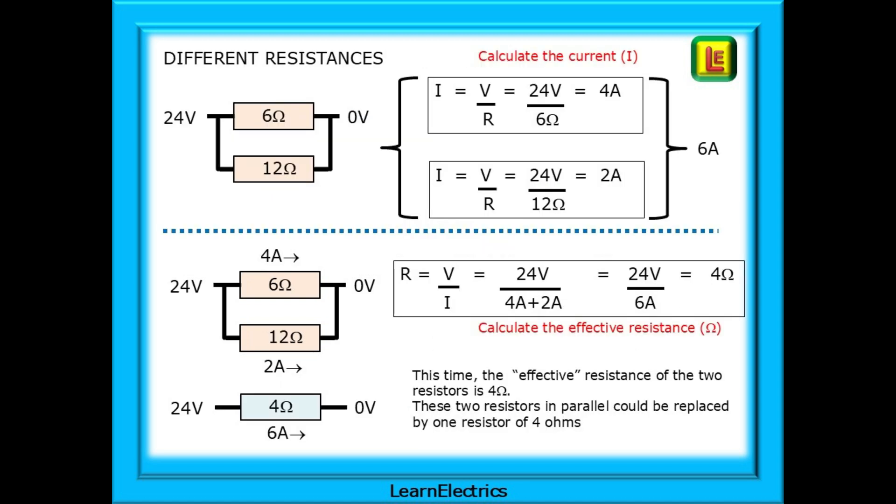What if we have different value resistances in parallel? Let's have an example. A 6 ohm and a 12 ohm resistor in parallel across a 24 volt supply. If we do our calculations correctly, the bigger resistor value should have the lower current flow. Let's look. I equals V over R and 24 volts divided by 6 ohms is 4 amps and 24 volts divided by 12 ohms is 2 amps. That looks about right. The 6 ohm resistor is carrying twice the current of the bigger 12 ohm resistor.